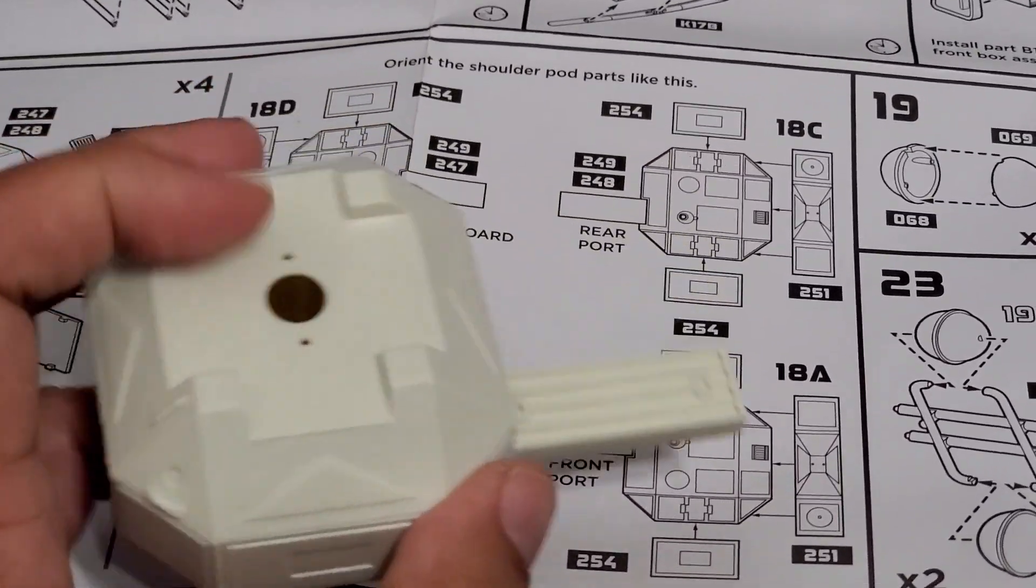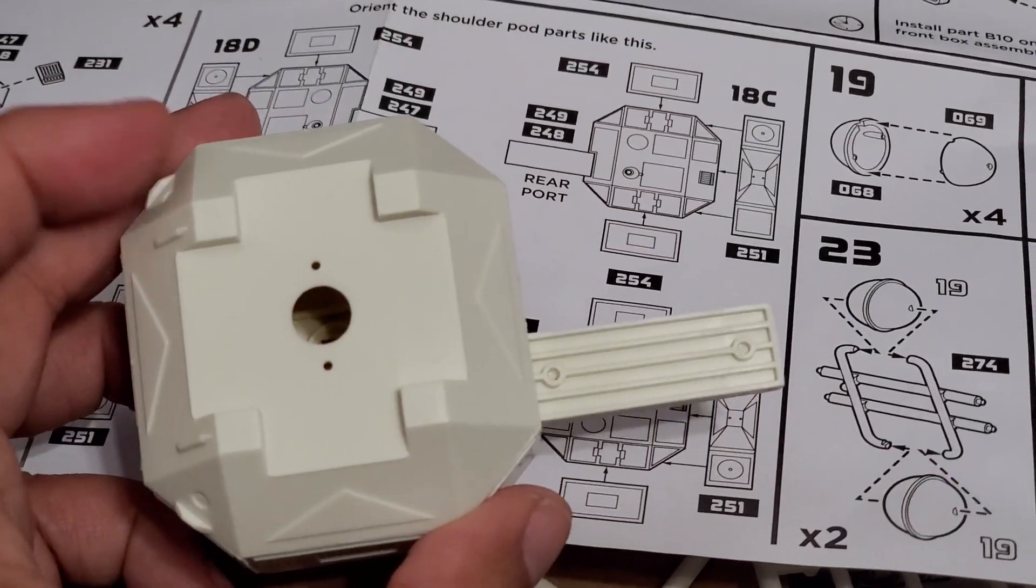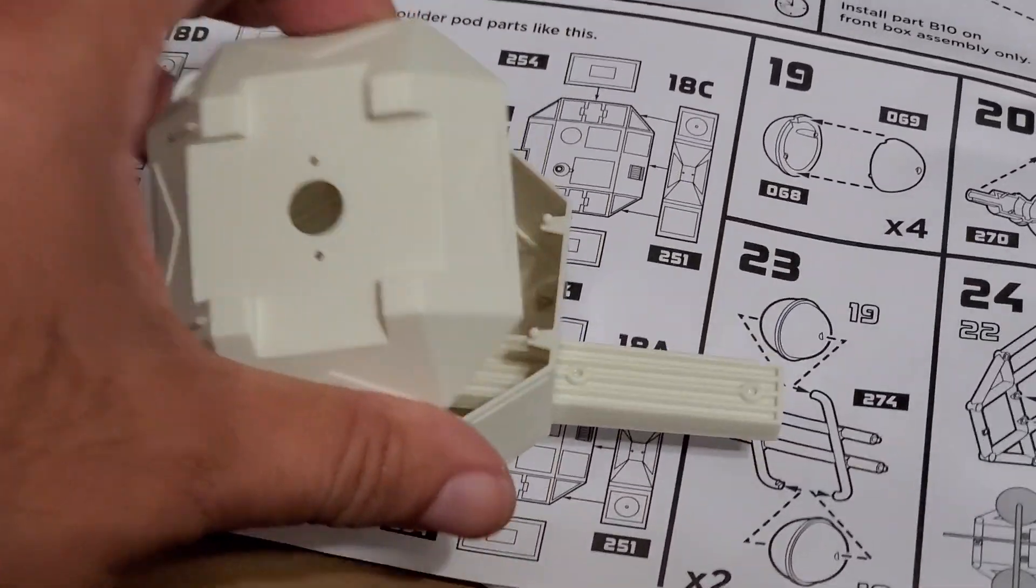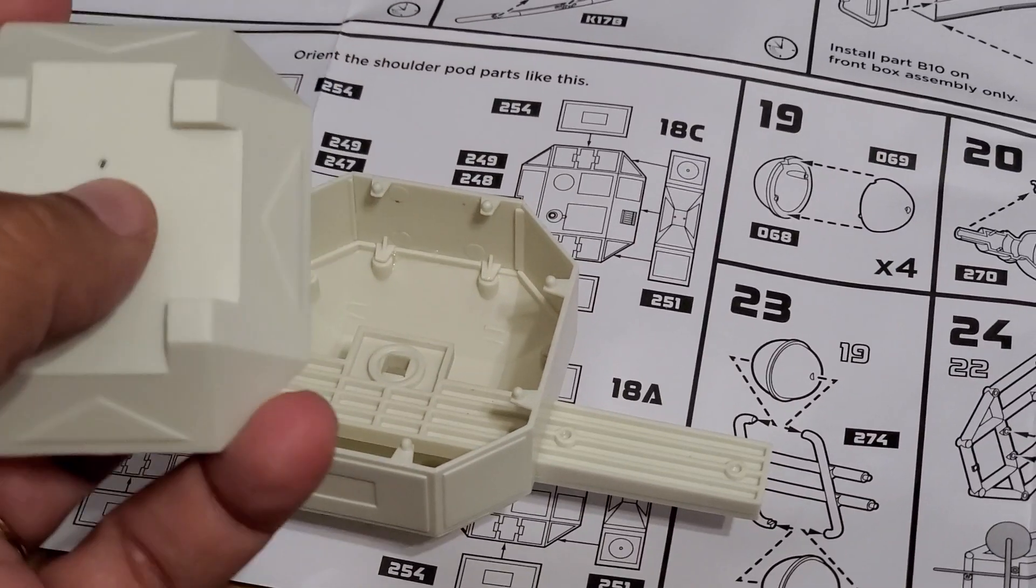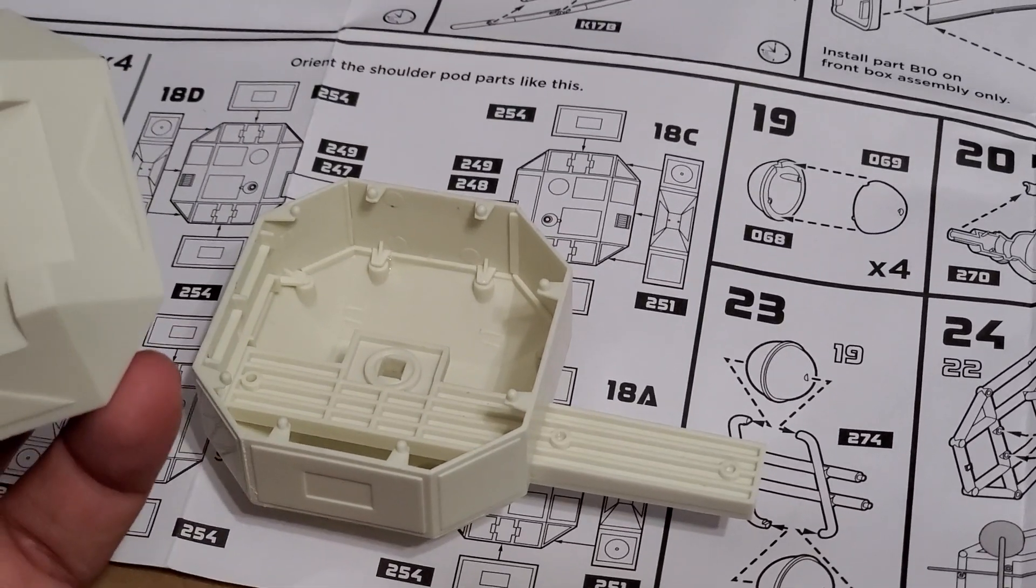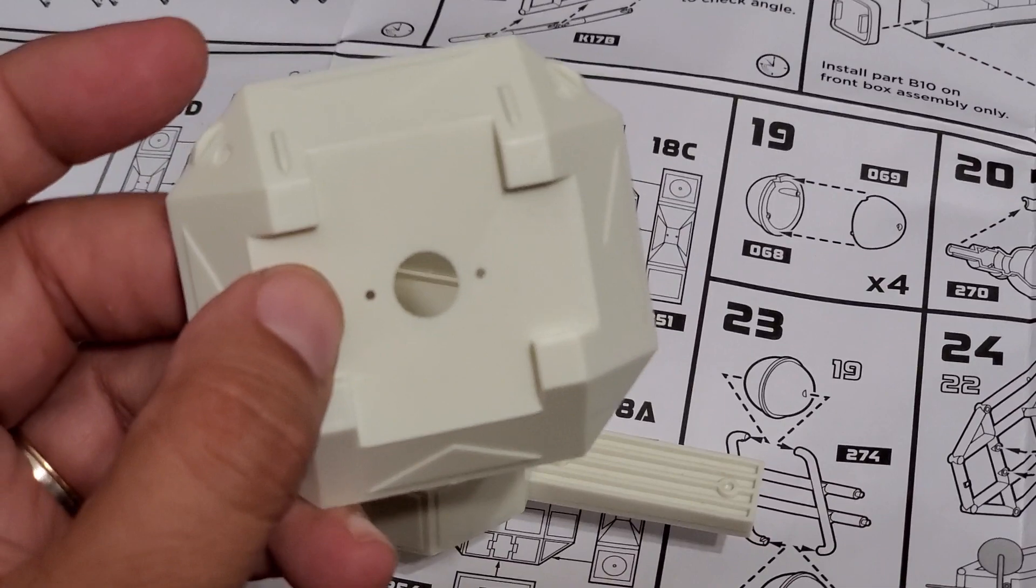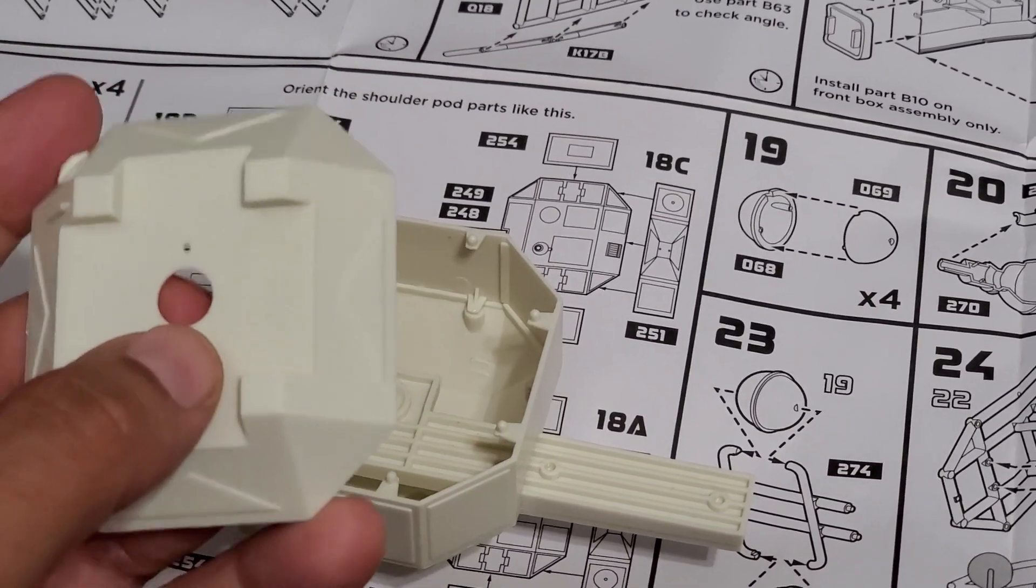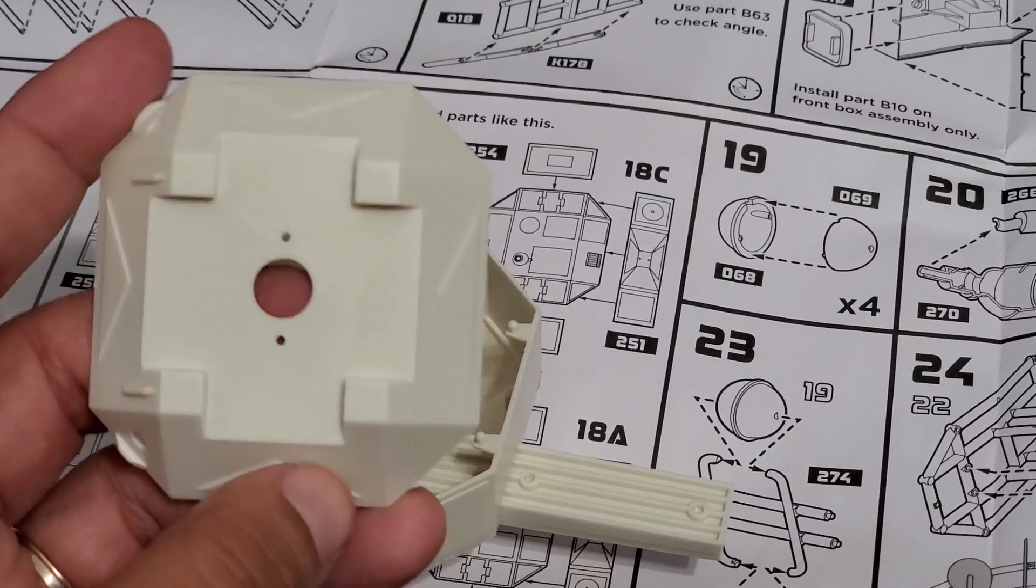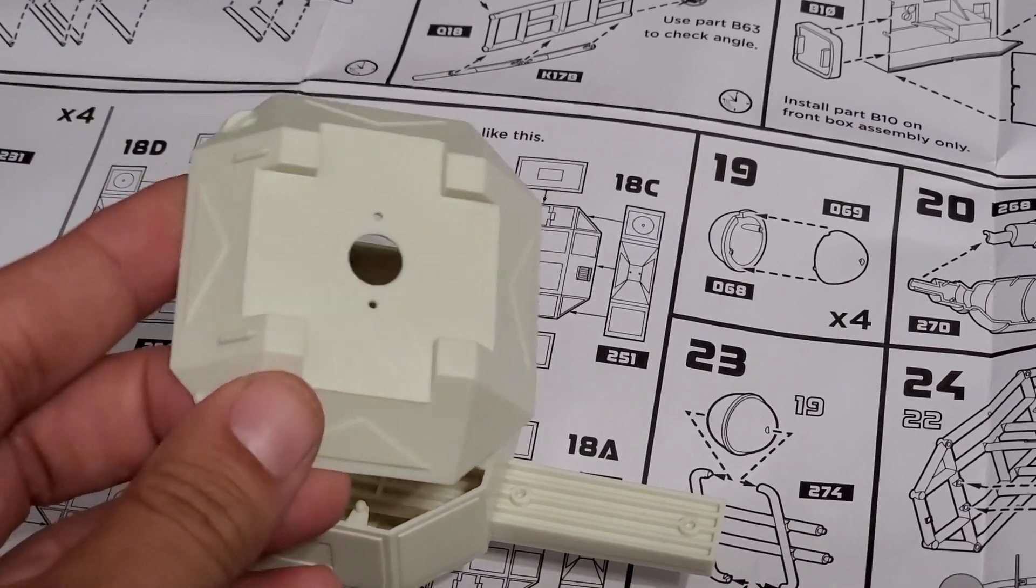You could easily make the mistake and put this bottom piece like this, and that would be incorrect. At least according to the box art, I never noticed these before on any Eagle, but this kit has it, so I guess Eagle 2 of second season had it.